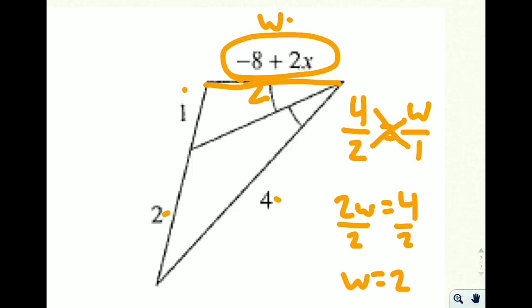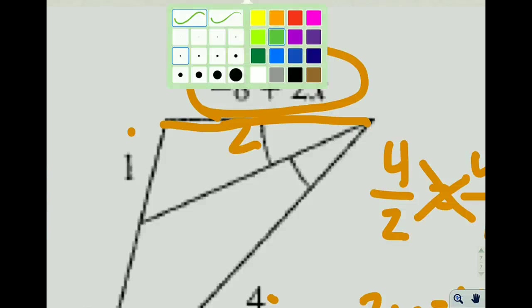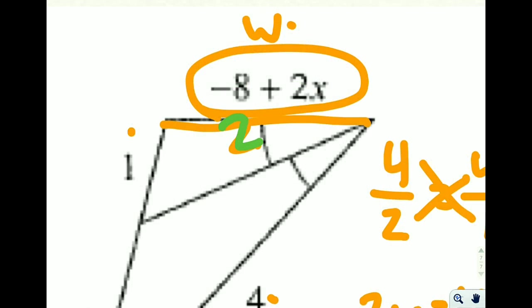And since this side, this 4, is twice as big as 2 here, it seems reasonable that 2 should be twice as big as 1. So we know that this side is 2.